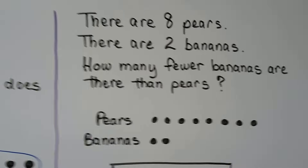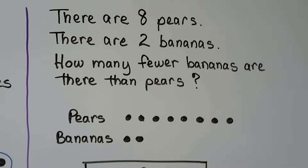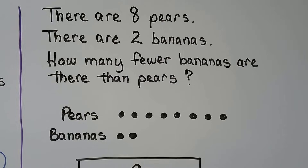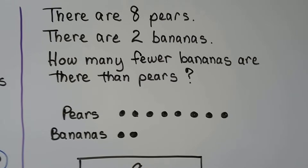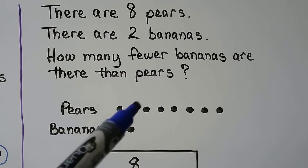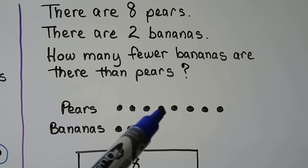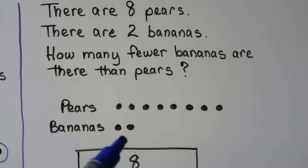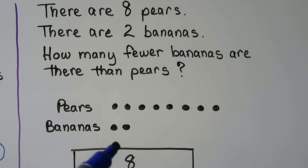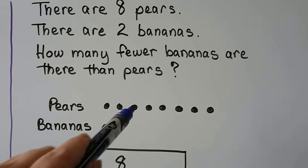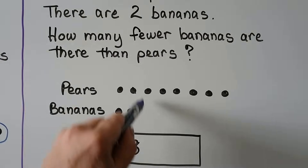There are eight pears. There are two bananas. How many fewer bananas are there than pears? We make eight dots for eight pears and two dots for the bananas, and we can see the difference starting right here.